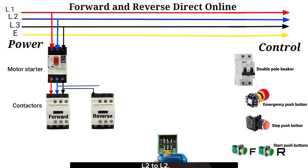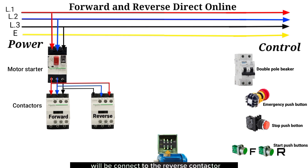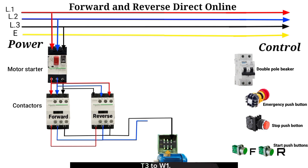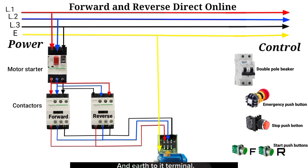The forward contactor input is looped to the reverse contactor input with a phase swap: L3 to L1, L2 to L2, and L1 to L3. The output of the forward contactor connects to the reverse contactor output: T3 to T3, T2 to T2, and T1 to T1. Reverse contactor output connects to the motor terminals: T3 to W1, T2 to V1, T1 to U1, and Earth to its terminal.